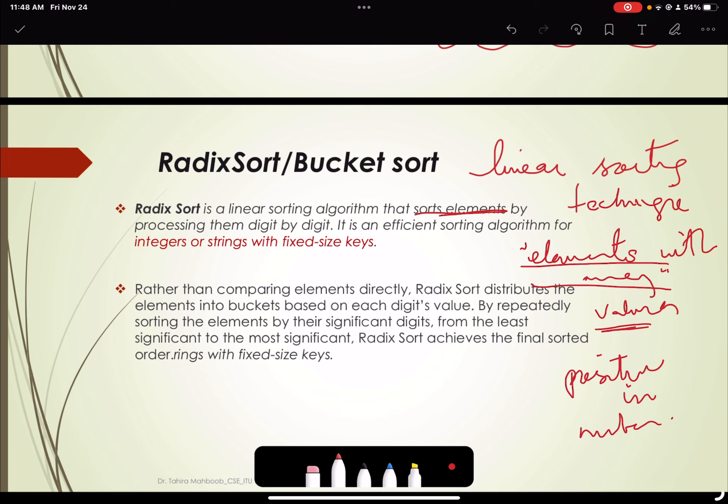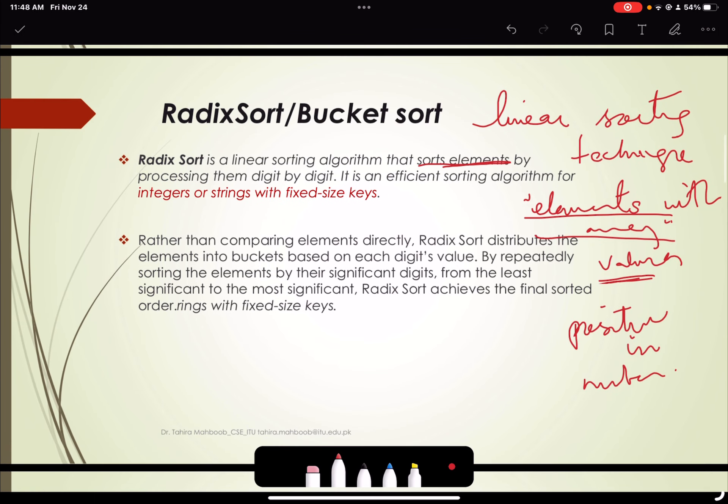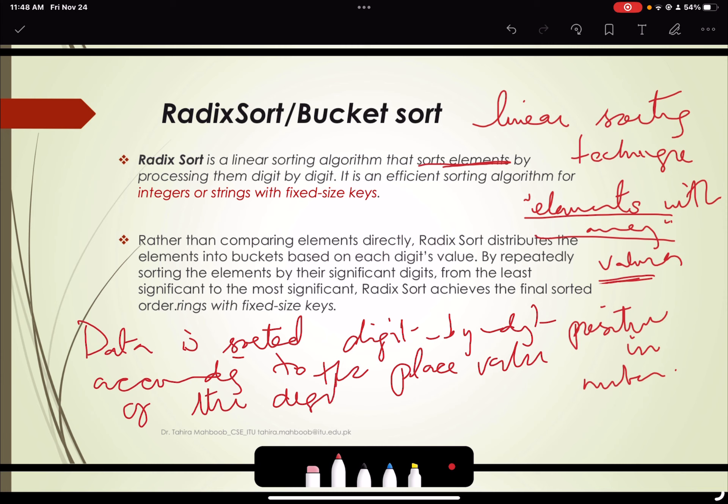So in Radix sort, data is sorted digit by digit according to the place value of the digit, or we can say the position of the digit in the number.